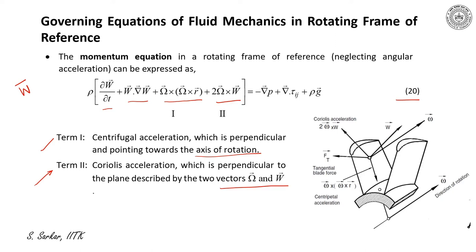The right-hand side of the equation represents the pressure gradient term, stresses, and body force. I have indicated a schematic illustrating the direction of Coriolis and centrifugal forces as vector quantities. I have illustrated the axis of rotation as capital omega, and with respect to this axis, I have illustrated the Coriolis and centrifugal forces.